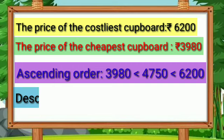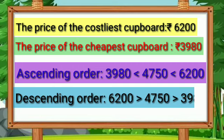Then the prices in descending order: Rs. 6,200 is greater than Rs. 4,750. Rs. 4,750 is greater than Rs. 3,980.